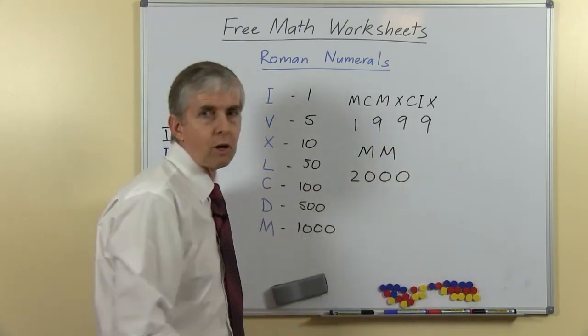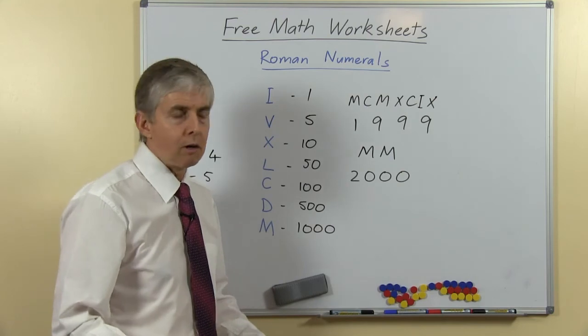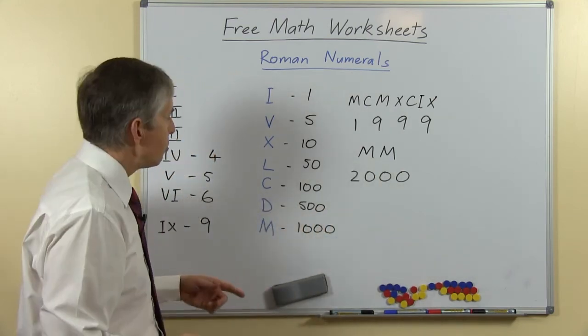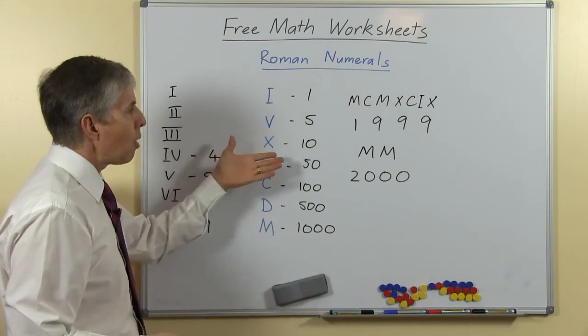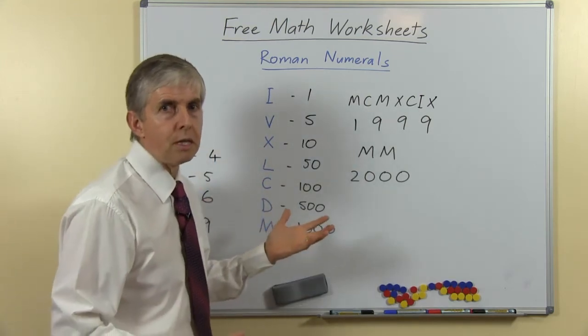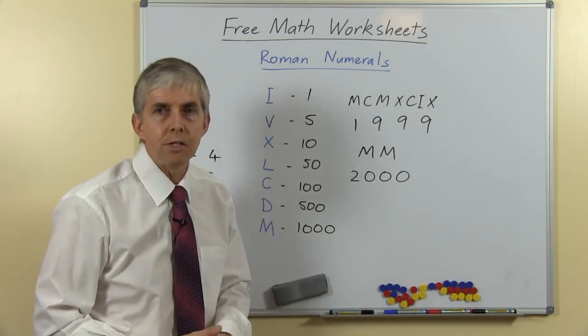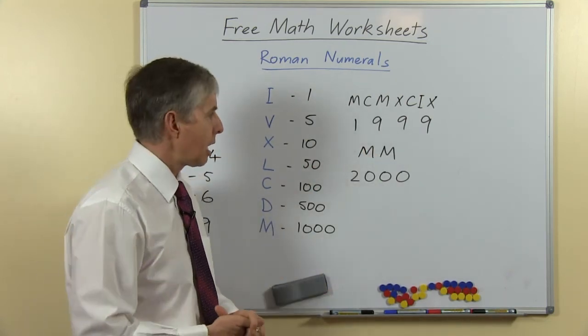The Romans didn't have a 0, but they didn't need a 0, because this M is not the same as a symbol for a 100, a 10 or a 1. They would have used different symbols for that, so there's absolutely no need for zeros and of course they didn't actually have one.